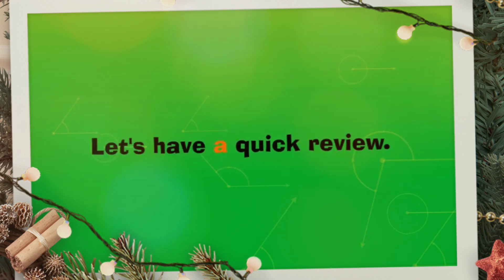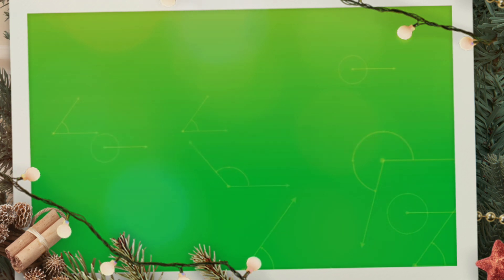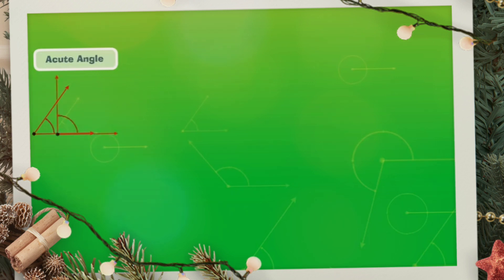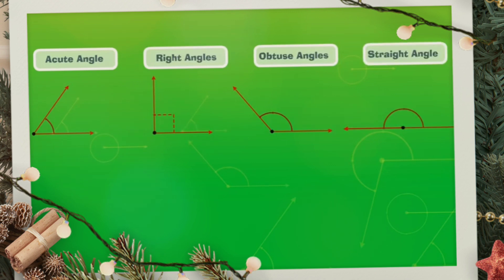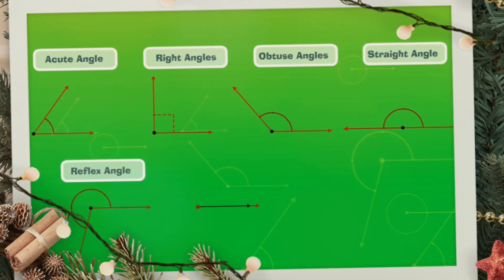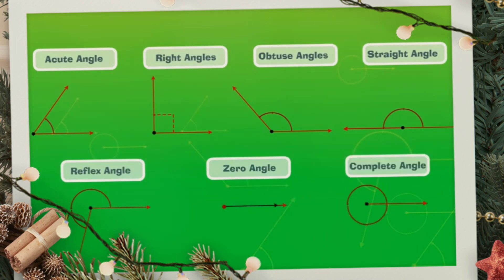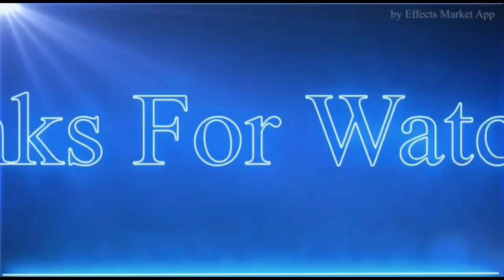Let's have a quick review: less than 90 degrees is called an acute angle; 90 degrees is called a right angle; greater than 90 but less than 180 is obtuse; 180 is a straight angle; greater than 180 but less than 360 is a reflex angle; zero degrees is a zero angle; and 360 degrees is a complete angle. Thanks for watching!